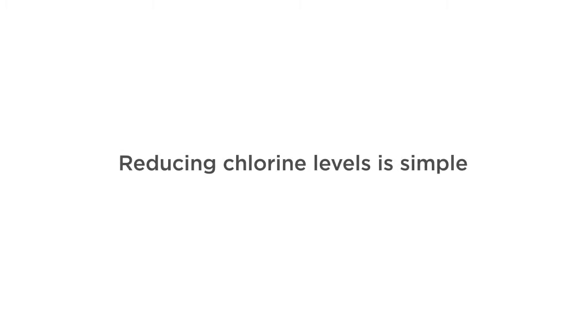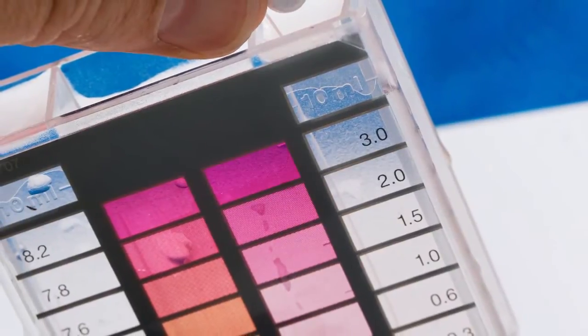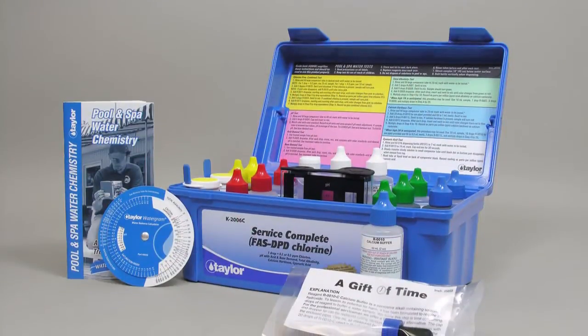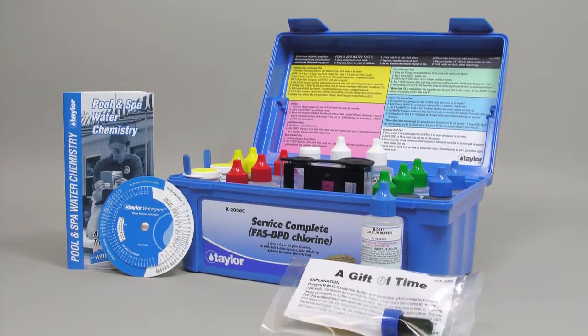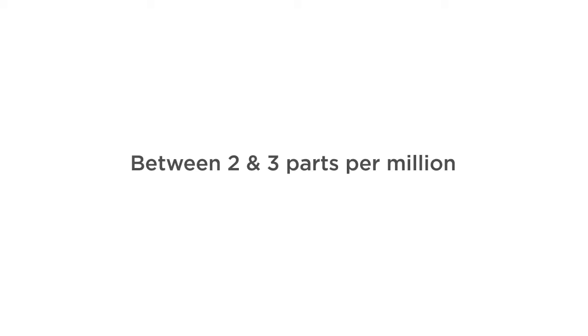If you have too much chlorine, reducing the level of chlorine is simple. First, test the water to determine the current chlorine level. Test your water with a high quality pool test kit. A normal chlorine level for most pools is between 2 and 3 parts per million.